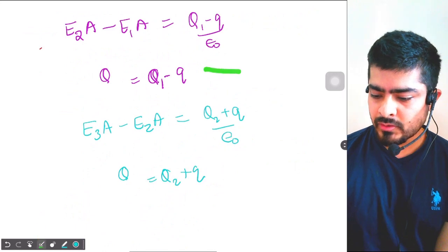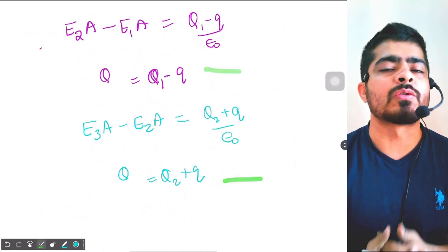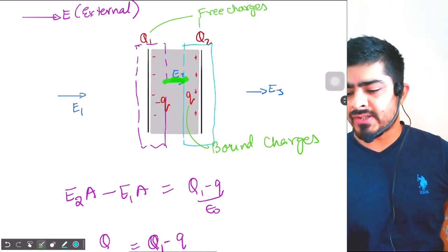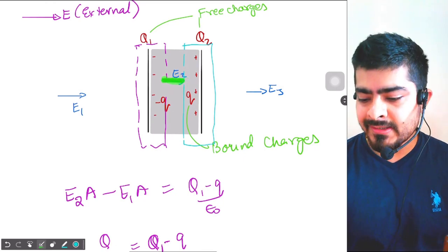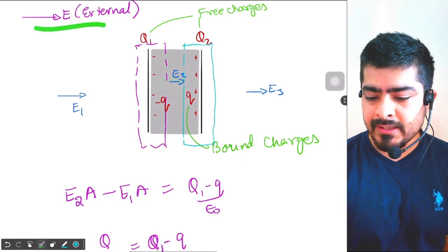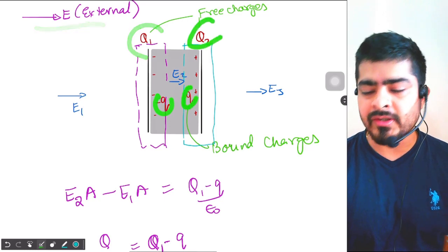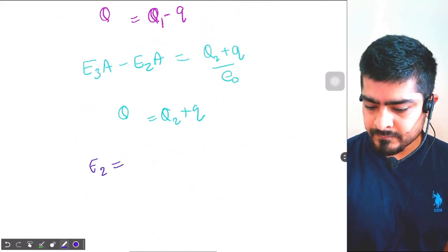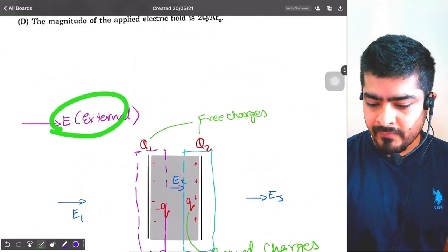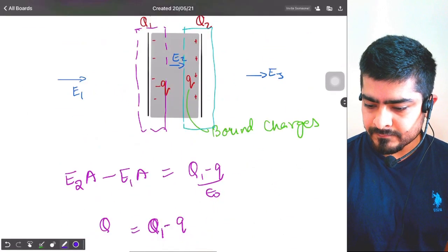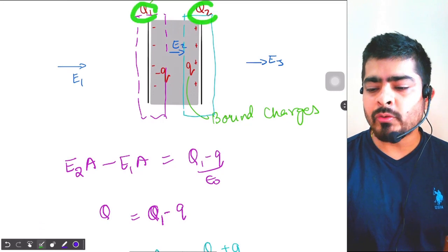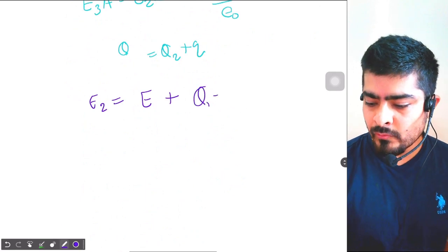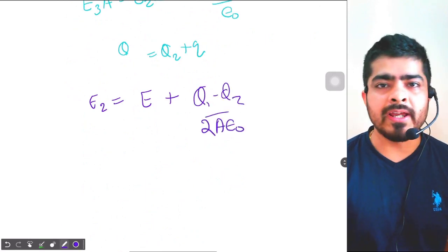We have two equations and three unknowns, so we need more equations. Let's look at the electric field in the center region, E2. E2 will be the net electric field due to E, Q1, minus q, plus q, and Q2. Q1 will create a field in one direction and Q2 in the opposite, so we subtract them: Q1 minus Q2 divided by 2Aε₀. Then due to the bound charges q and minus q, their combined field contribution adds up to Q/Aε₀ in the opposite direction. This gives our third equation.